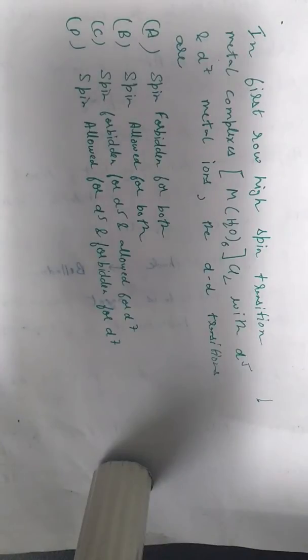This particular question states that in first row high spin transition metal complexes of the form MH2O6Cl2 with D5 and D7 metal ions, the DD transitions are... and these are the four given options.